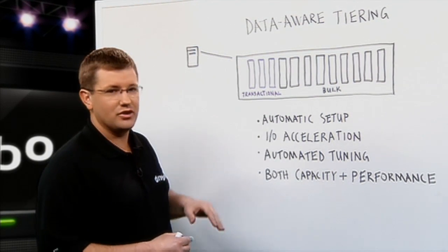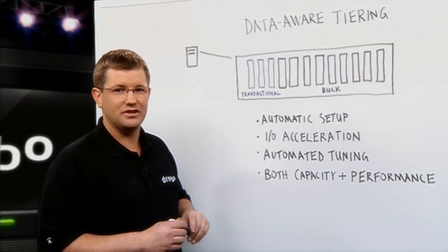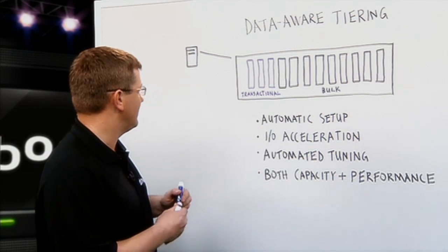When you put the drives in the Drobo, that's the only interaction that the user has to have to set up tiering. It is that simple.